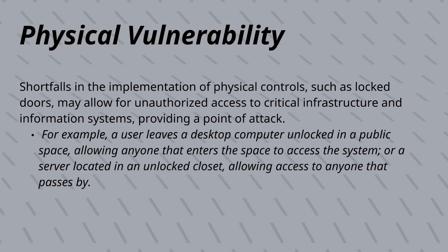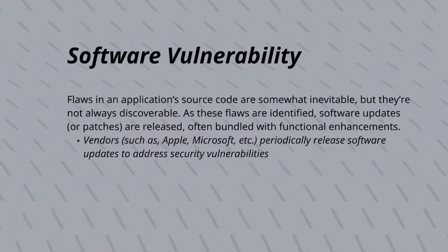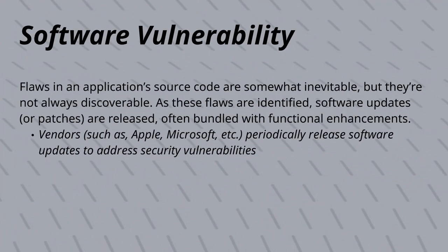For example, a user leaves a desktop computer unlocked in a public space, thus allowing anyone that enters that space to access that system. Software vulnerabilities are flaws in an application's source code. As these flaws are identified, vendors periodically release software updates or patches in order to address these security vulnerabilities.